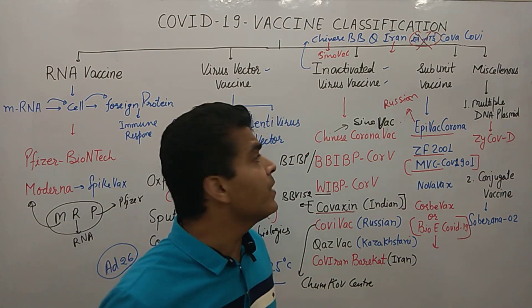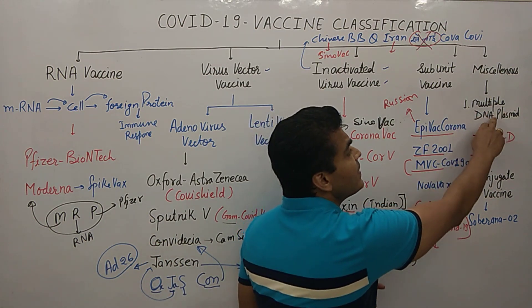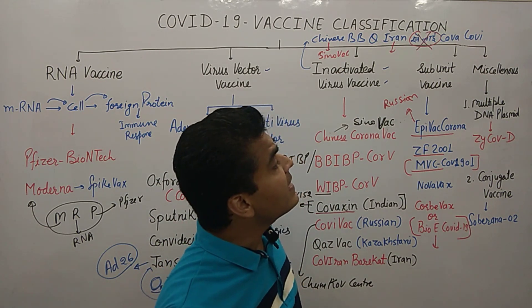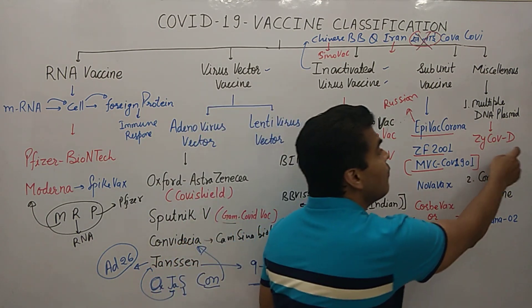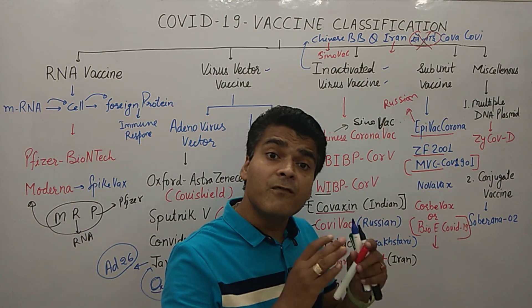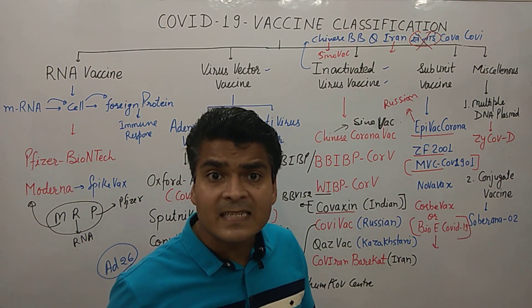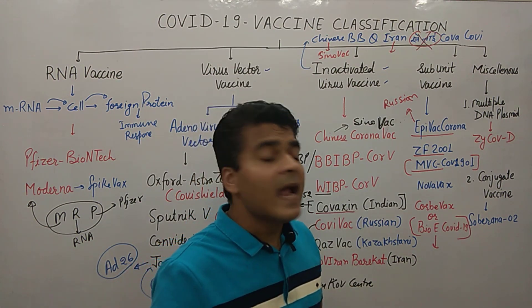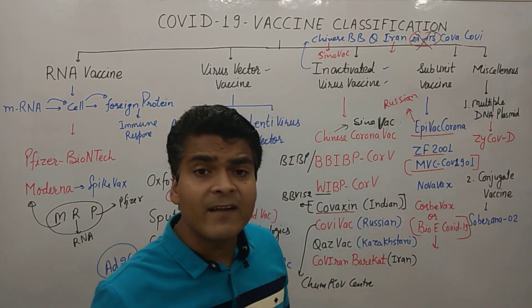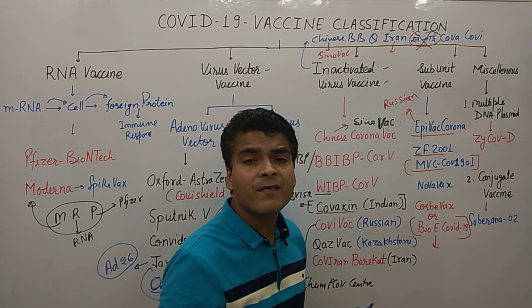Miscellaneous vaccines include two types: DNA plasmid vaccines and conjugate vaccines. The DNA plasmid vaccine example is ZyCov-D, which is India's first and the world's first approved DNA plasmid vaccine, approved by the Indian government for use in people above the age of 4. The conjugate vaccine example is Soberana 02.